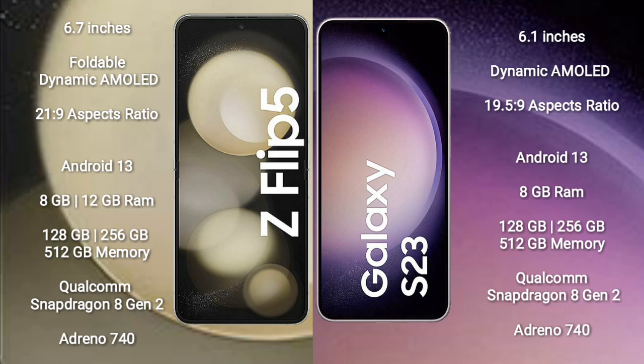The Samsung Galaxy Z Flip 5 comes with 8GB or 12GB RAM and 128GB, 256GB, or 512GB internal storage, with a Qualcomm Snapdragon 8 Gen 2 Plus processor and GPU Adreno 740. The Samsung Galaxy S23 comes with 8GB RAM and 128GB, 256GB, or 512GB internal storage, with a Qualcomm Snapdragon 8 Gen 2 processor and GPU Adreno 740.